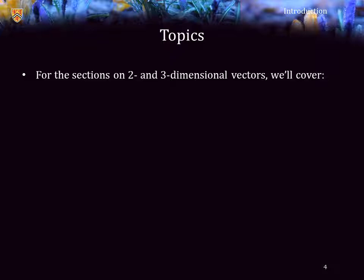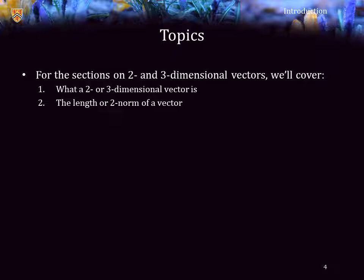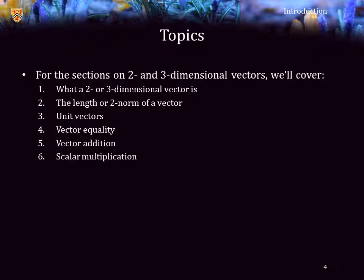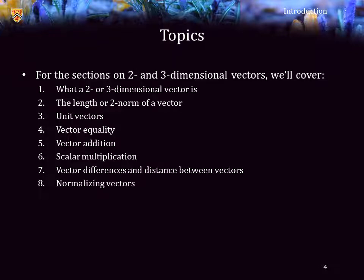The next two sections are going to cover first two-dimensional and then three-dimensional vectors. In each case we will cover what such a vector is, we will then describe the length of a vector — or what we're going to call the two-norm of a vector — we will then describe unit vectors, and then look at what is vector equality. We will then look at how we can add two vectors together and how we can multiply a vector by a scalar or a real number. We're then going to look at the differences between two vectors and how we can use this to define the distance between vectors.